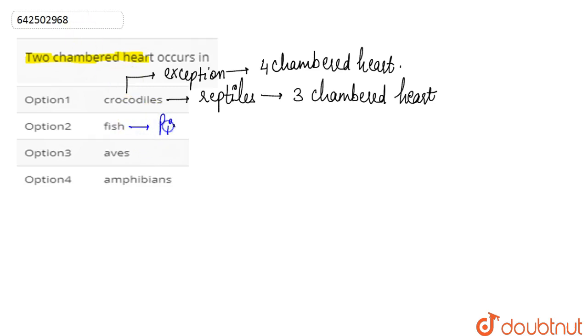Fishes have a two-chambered heart. They do not have the oxygenated and deoxygenated blood separated. So we can say that they have a two-chambered heart, so this is one of our correct answers here.